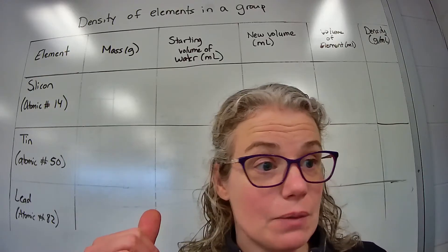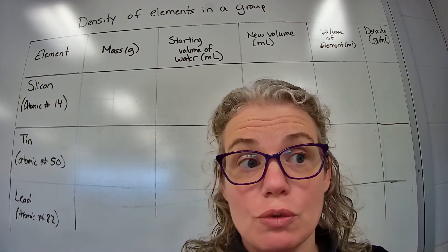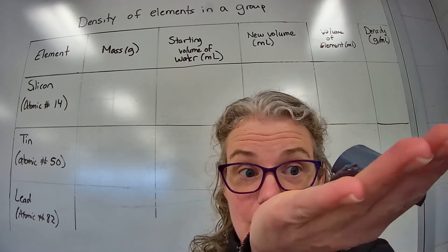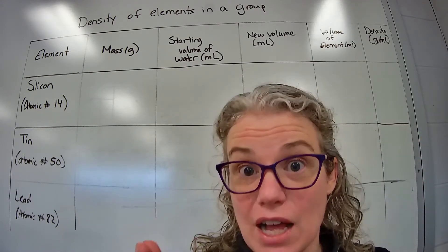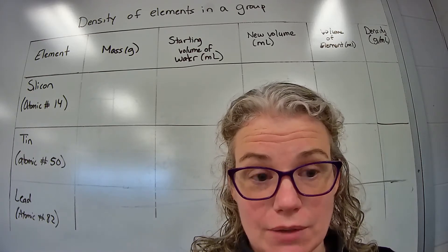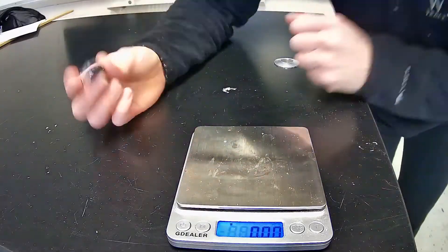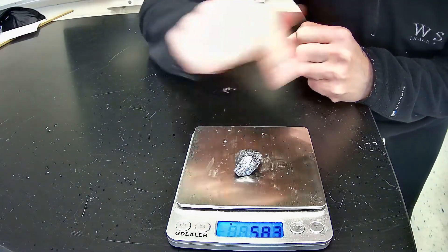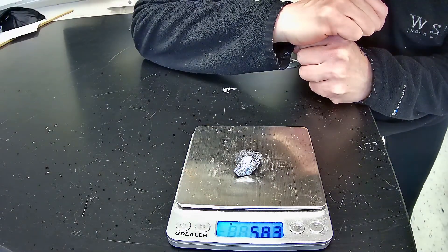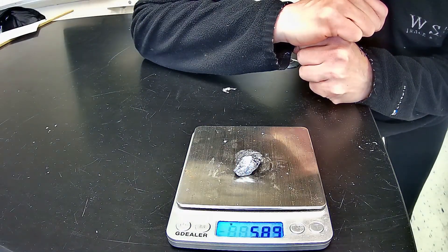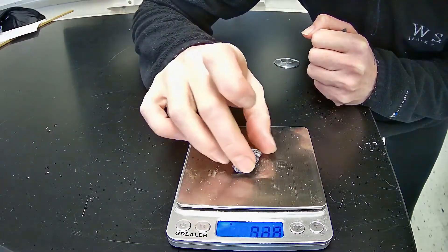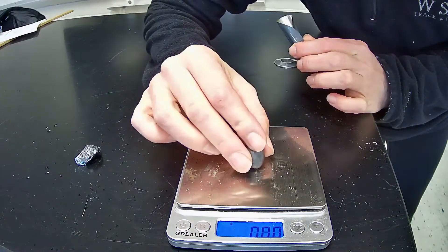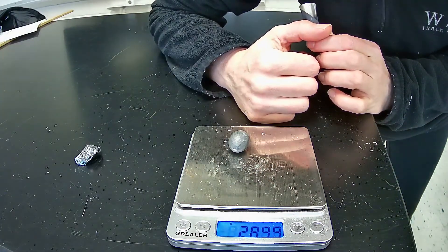You can see behind me the data table we're going to use to record information about the mass of these different samples, their volume, and then calculate their density. First, we're going to record the mass of each element. Here is silicon's mass — go ahead and record it, that is in grams, as shown by the little G on the scale. Here is the sample of tin, and finally here is the sample of lead's mass.